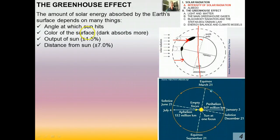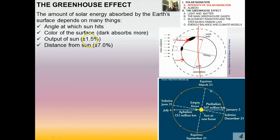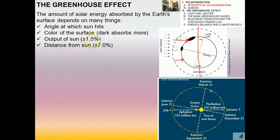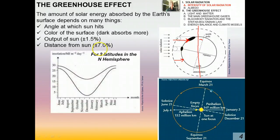The color of the surface is also important — this is the concept of albedo. A dark surface absorbs more solar energy than a light or shiny surface. The Sun's output changes by about 1.5% over time due to prominences, flares, and sunspots. The Earth-Sun distance also varies by about plus or minus 7% between aphelion and perihelion.